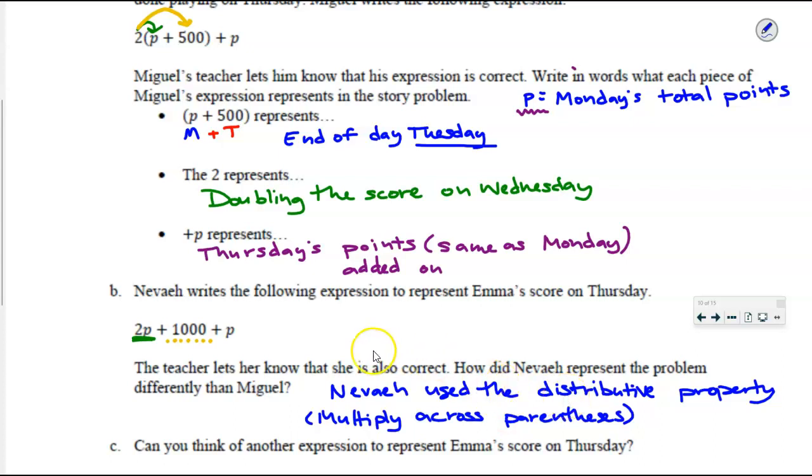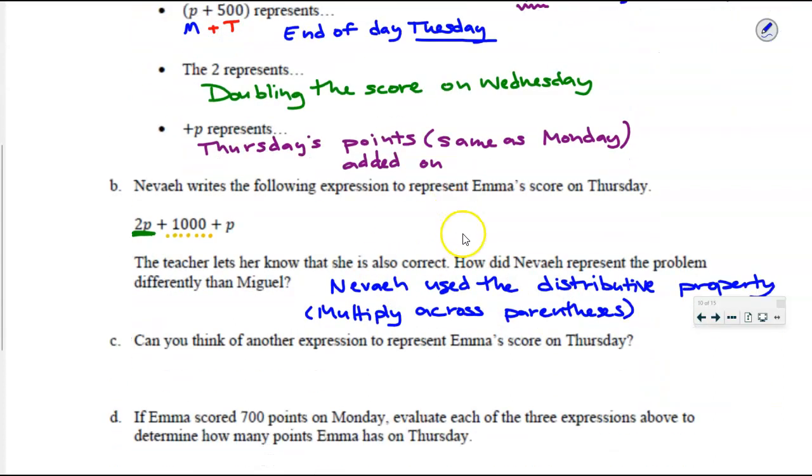The distributive property is when we multiply across parentheses. So Miguel was correct, Nevaeh is correct. Let's see if you can also find a different way than what Miguel or Nevaeh did. Can you write an expression that represents Emma's end of day Thursday score? Talk at your tables. There's not enough hands. Go back and talk at your tables. If these were algebra tiles, if it was like what we did on our warm-up, what would we do here?